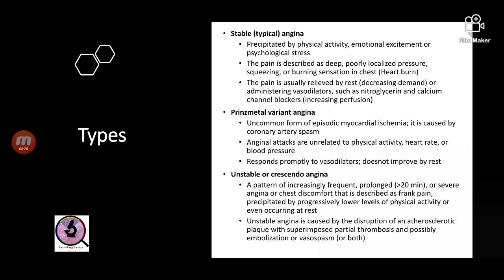Unstable or crescendo angina involves prolonged pain — more than 20 minutes — that is severe and described as frank pain precipitated by lower levels of physical activity. This form of pain happens even at rest and is caused by disruption of the atherosclerotic plaque.